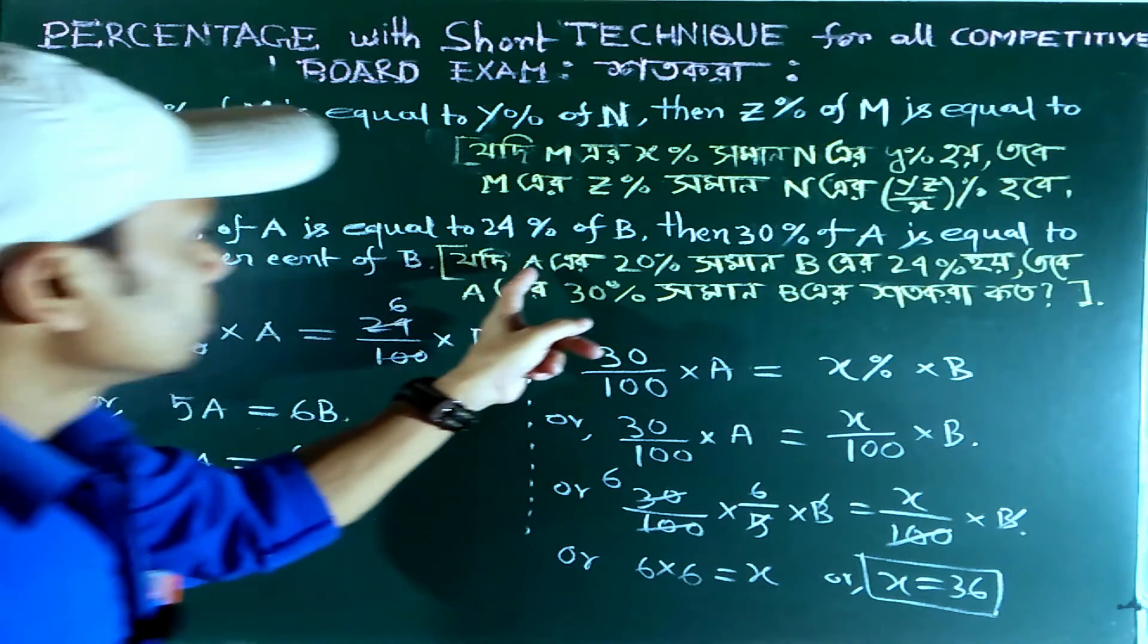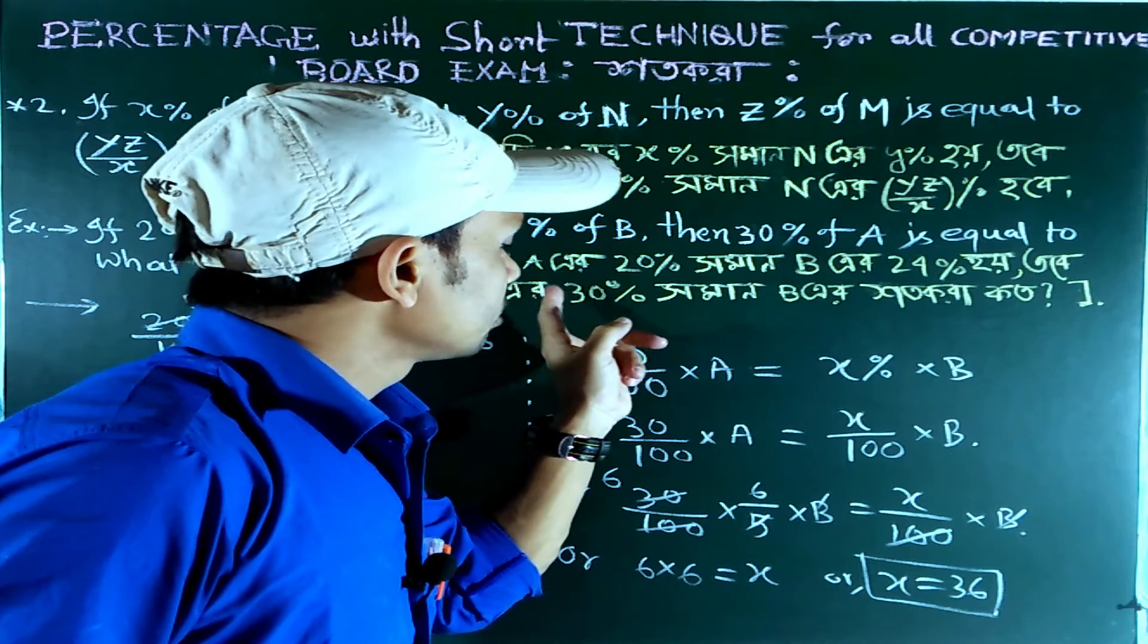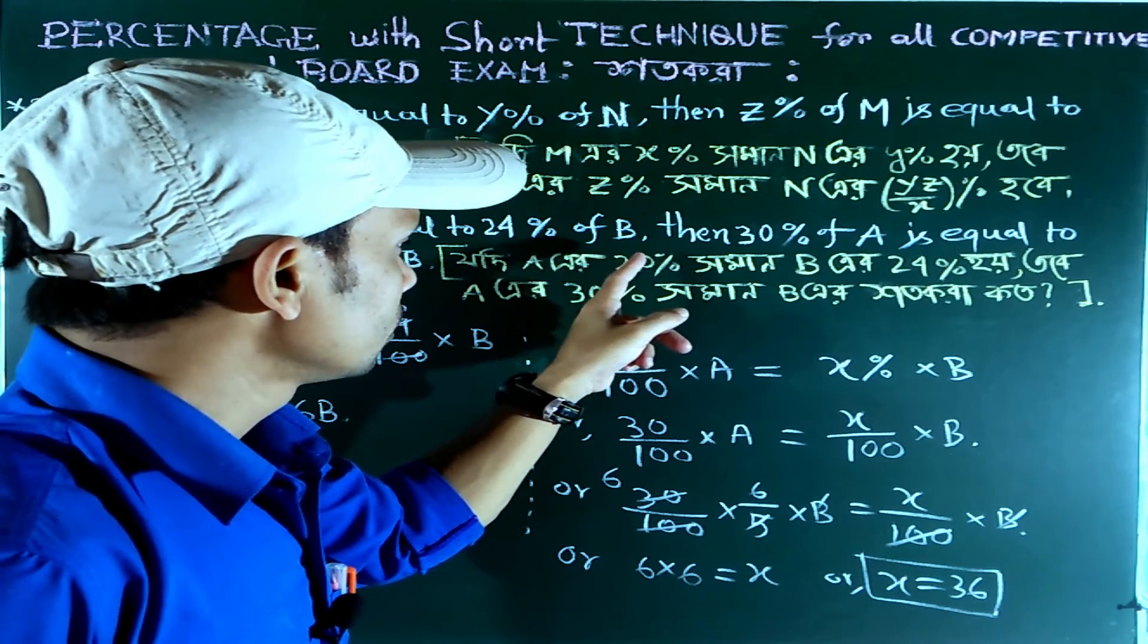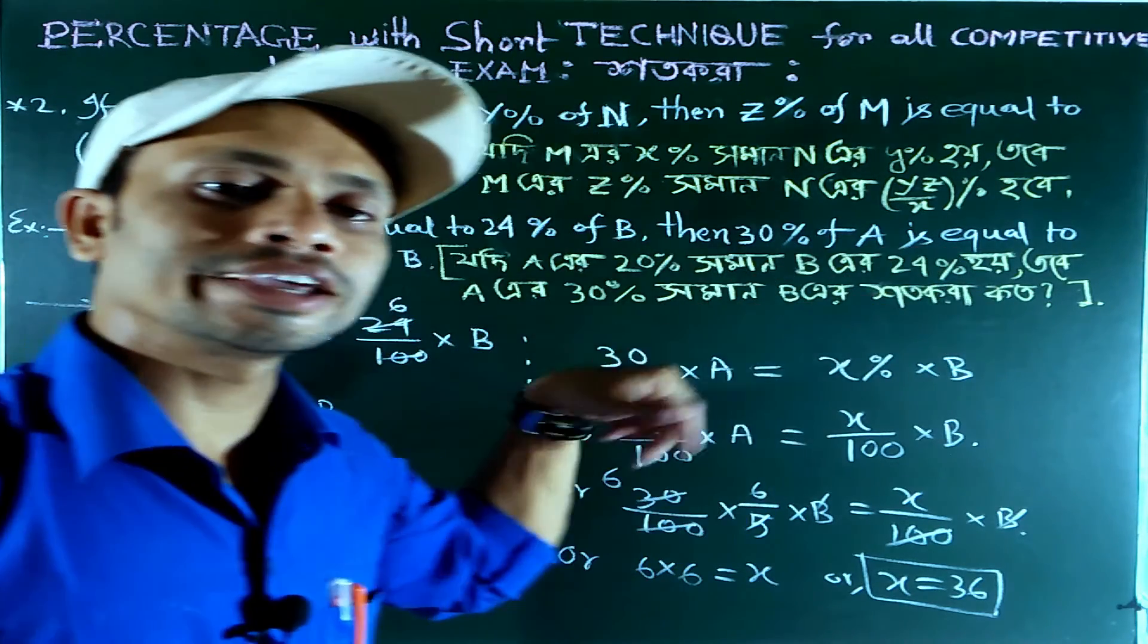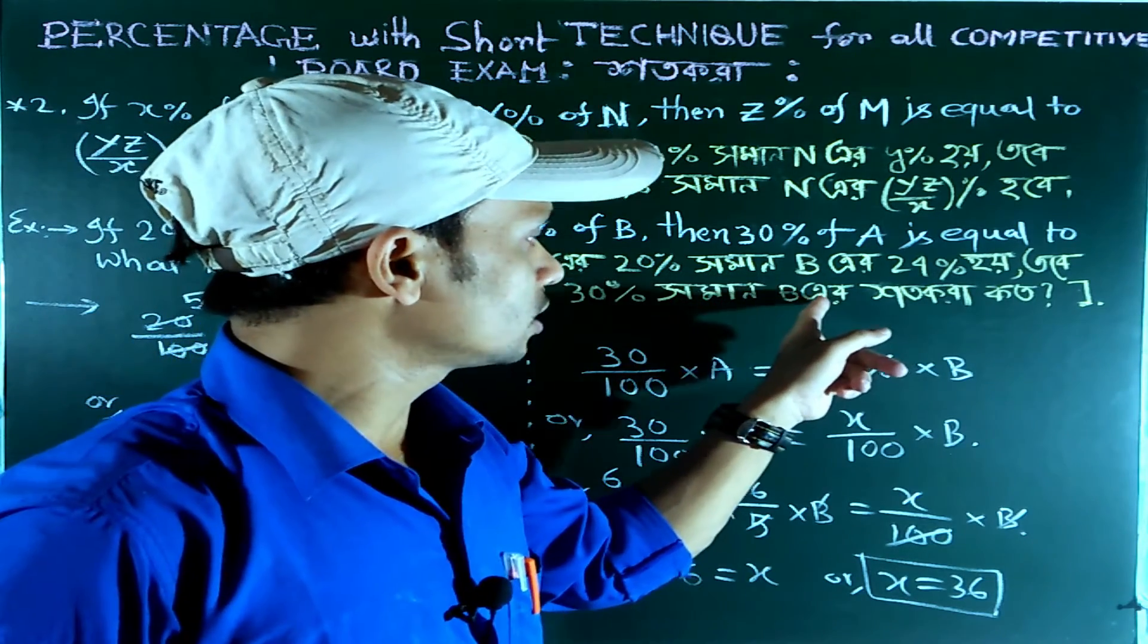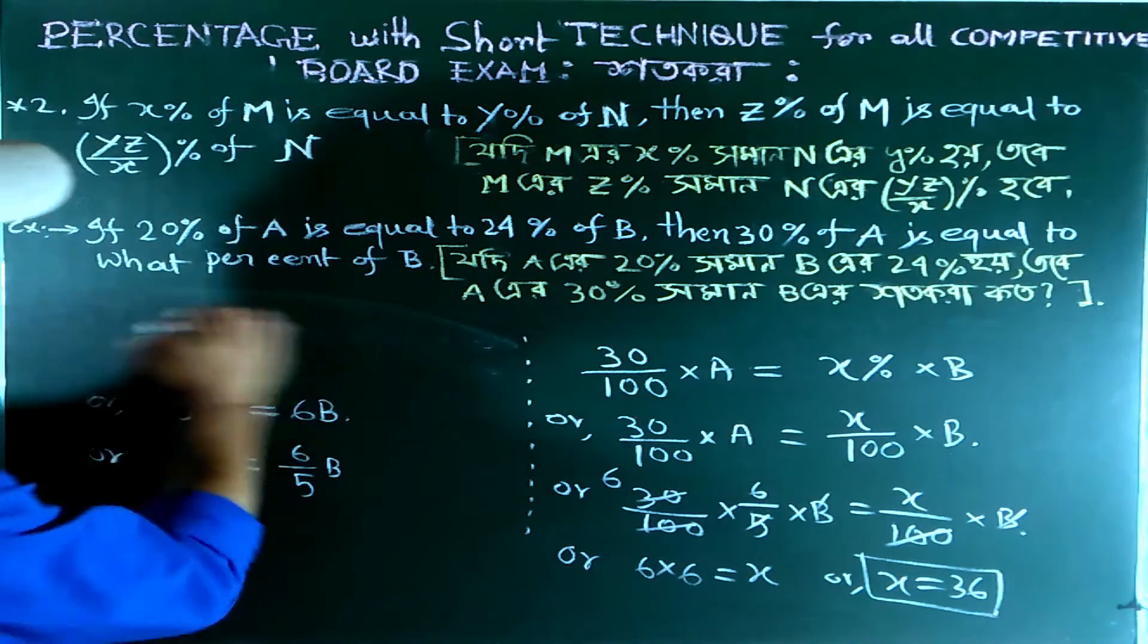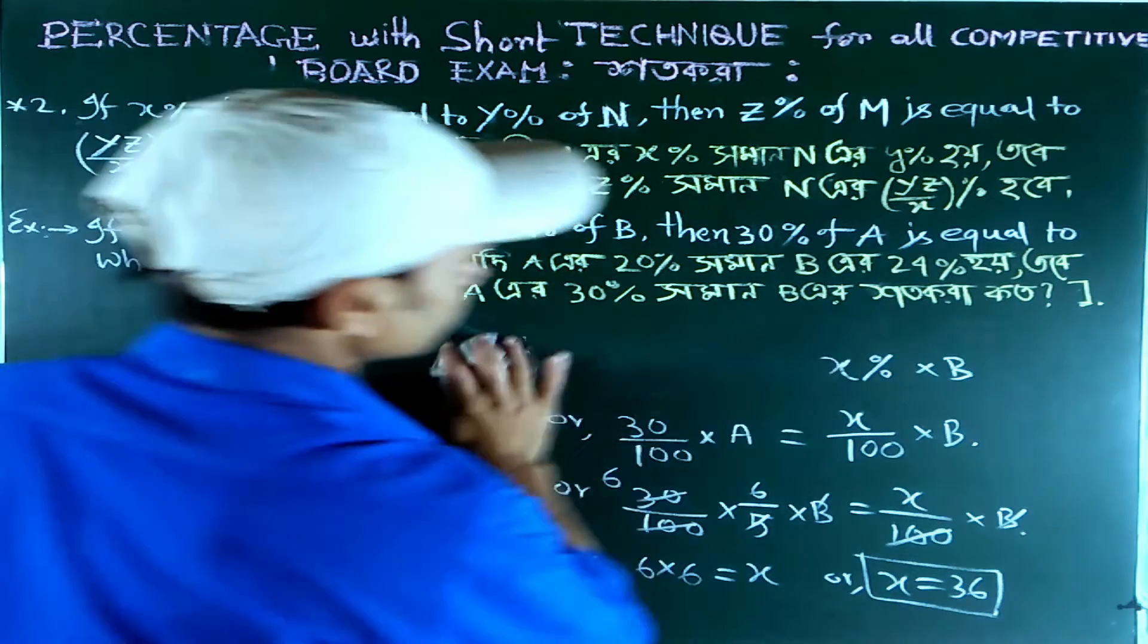That means 30 percent of A equals to 36 percent of B. So if 20 percent of A equals 24 percent of B, when we increase A to 30 percent, B becomes 36 percent. Now let me show you the direct advance methodology.